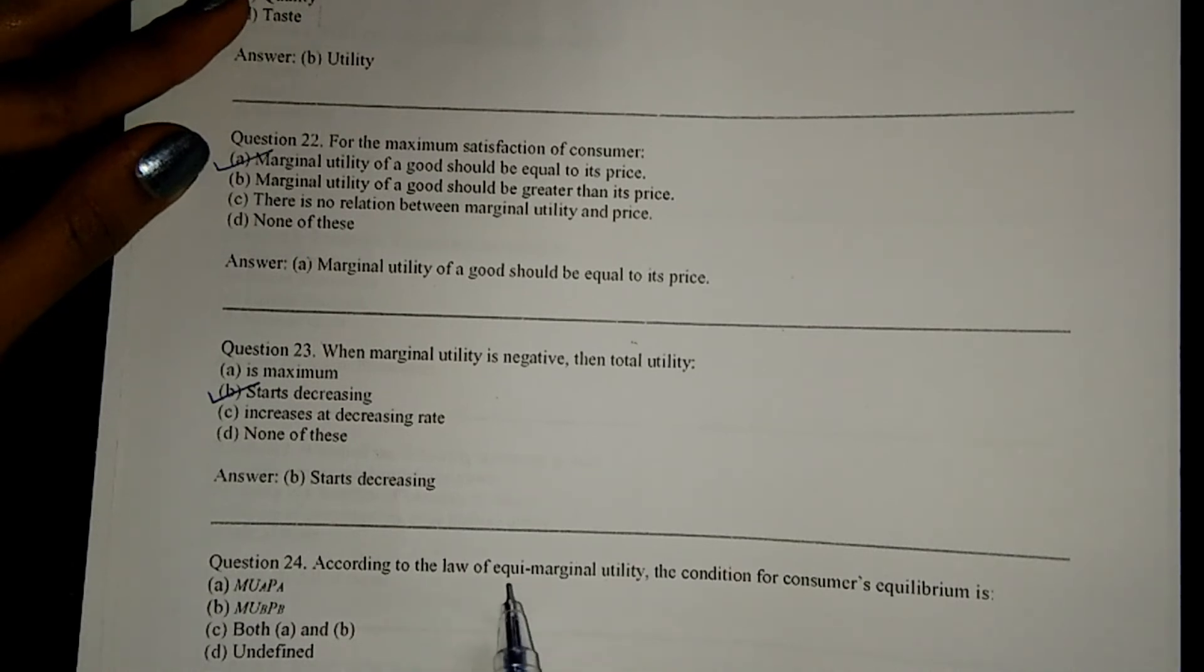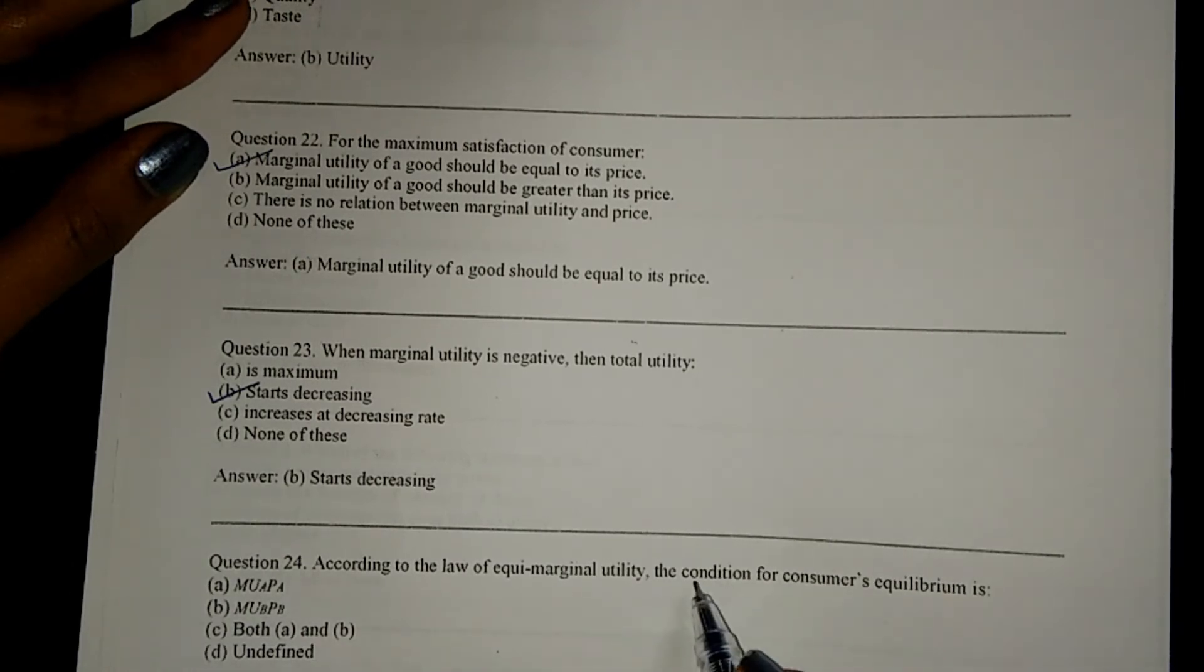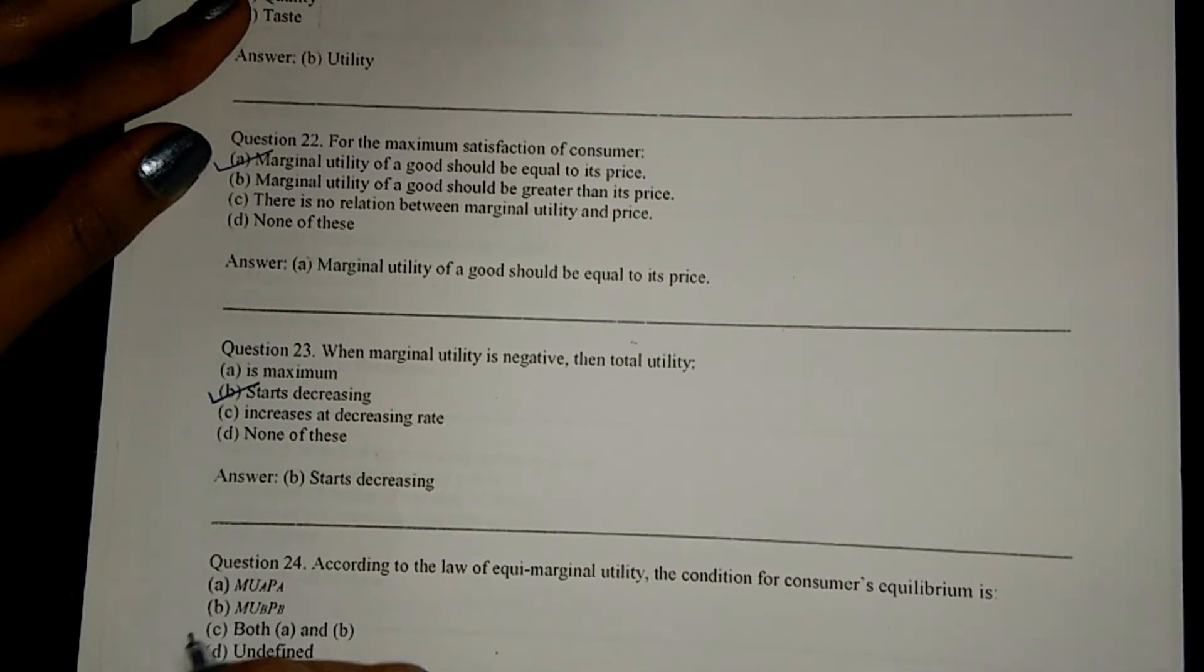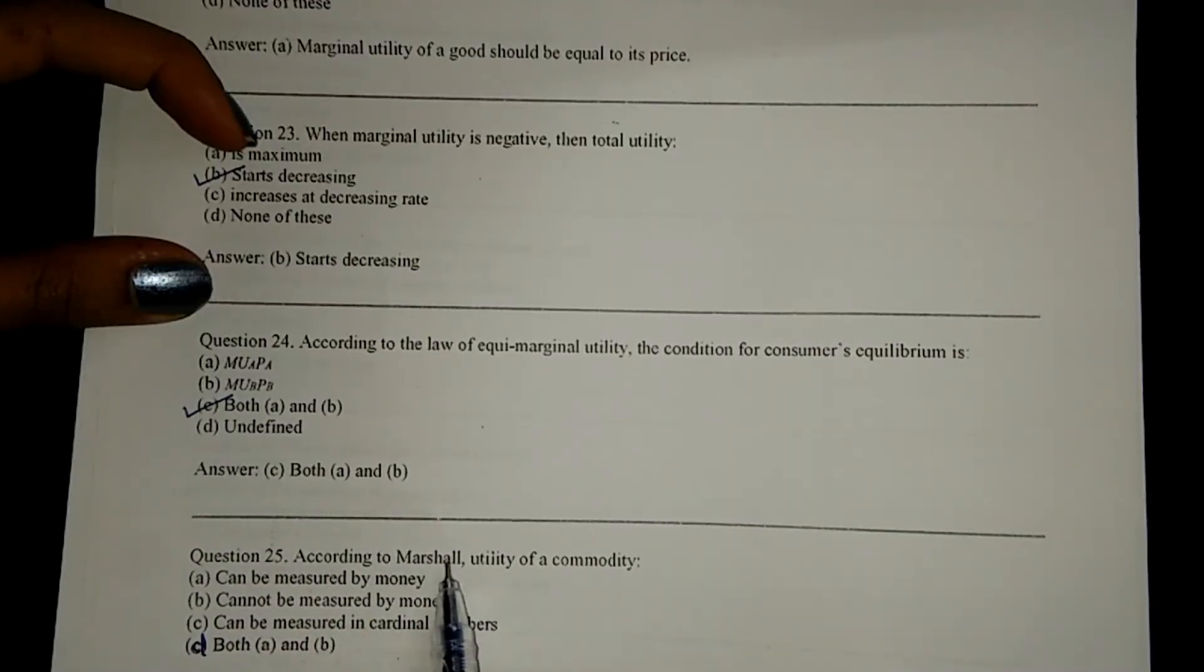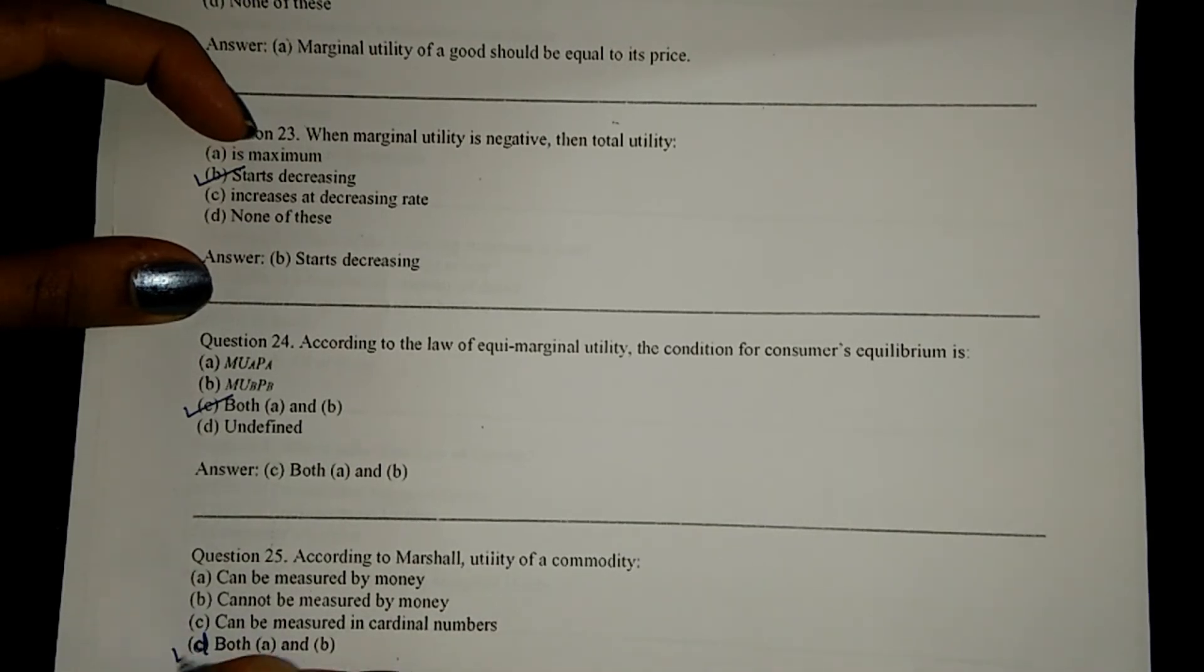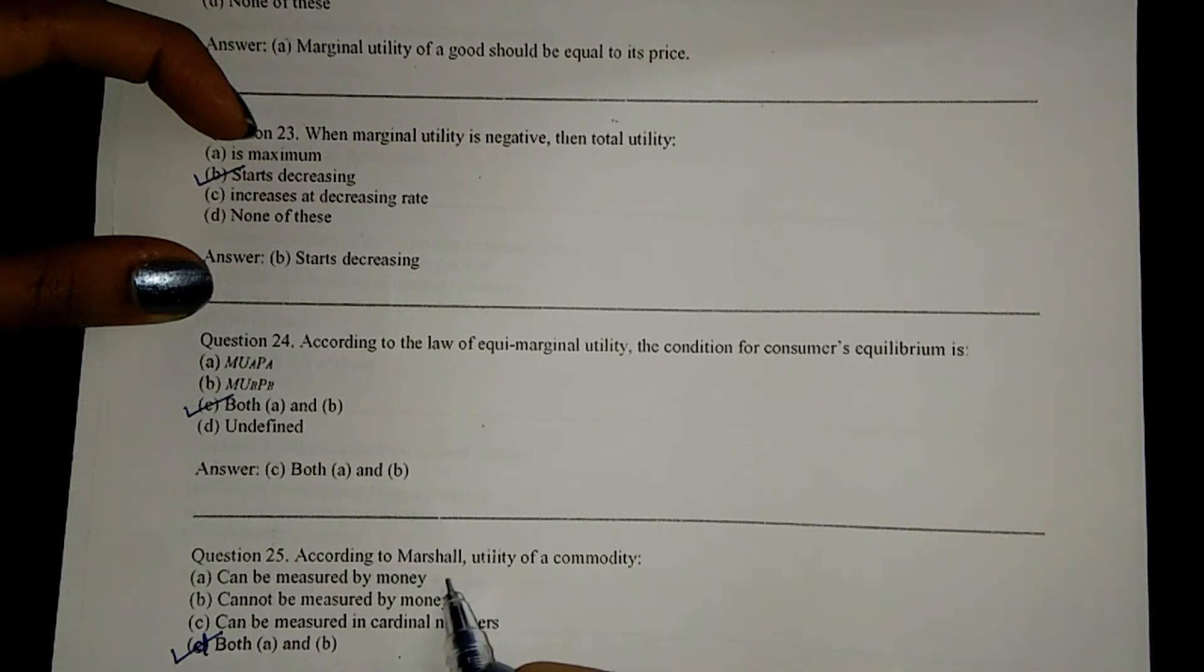According to the law of equi-marginal utility, the condition for consumer equilibrium is both A and B, that is option C. Next, according to Marshall's utility of a commodity, option D, both A and B: can be measured by money, cannot be measured by money.